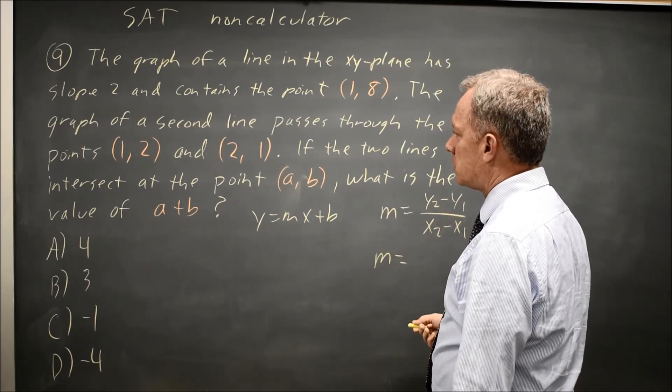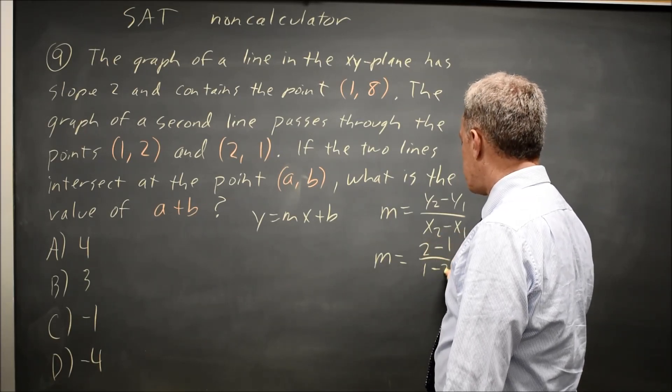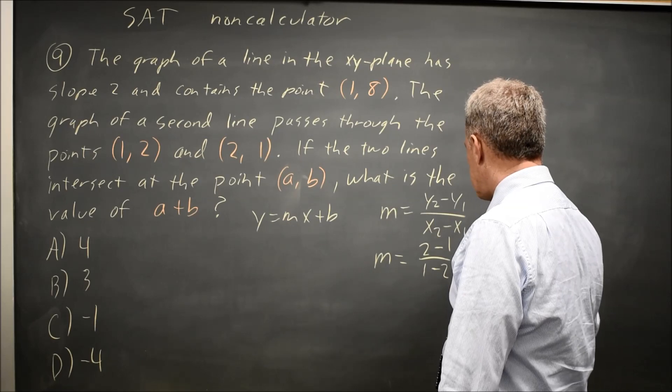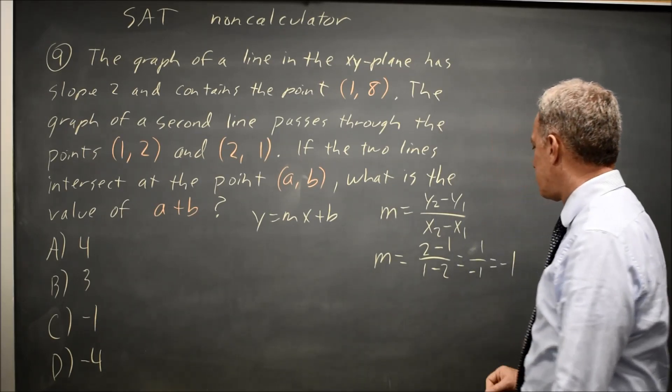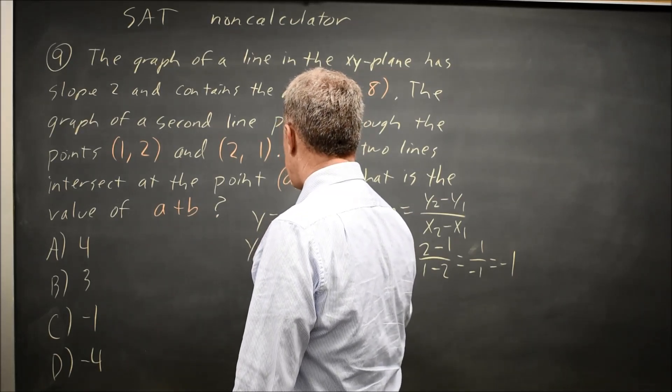That's m equals 2 minus 1 over 1 minus 2 is negative 1. I'm sorry, 1 over negative 1 is negative 1. So y equals negative x plus b.